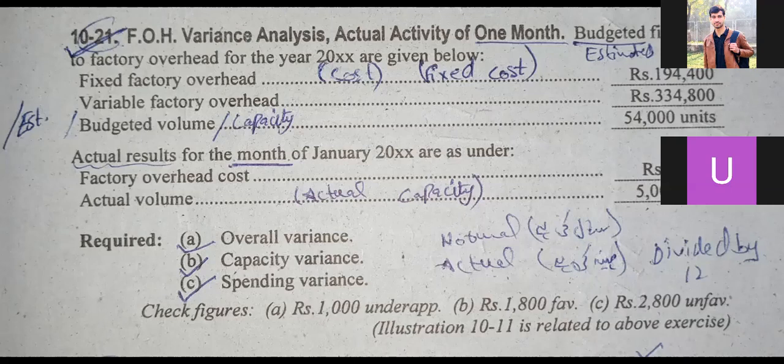You have to find the actual activity of one month. You have to find the overall variance, capacity variance, and spending variance. First of all, we have to see the topic of actual activity of one month.